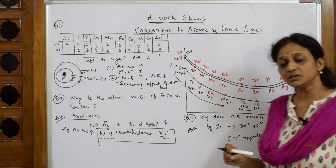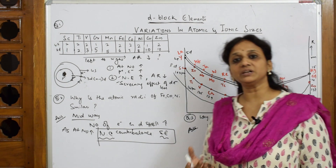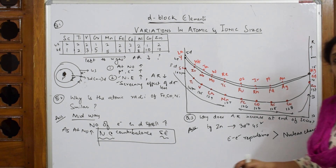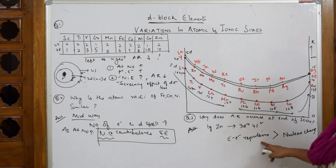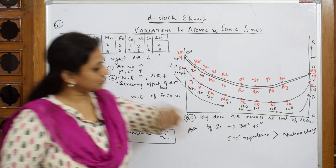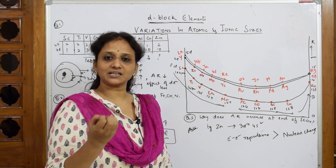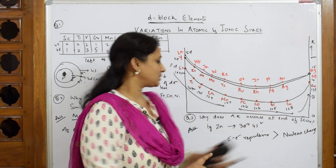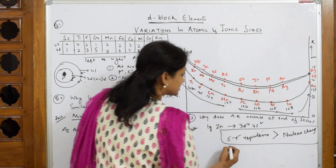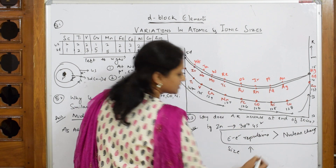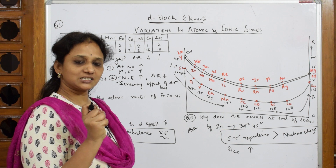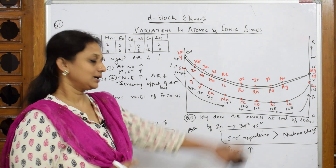While the nuclear charge is trying to pull the electron in, the electron-electron repulsion dominates. So at the beginning of the series, nuclear charge was dominating; in the middle, both were balanced; at the end, electron-electron repulsion starts increasing. Because of this repulsion, the distance between the electrons increases, and so the size automatically increases.